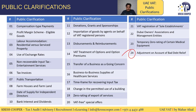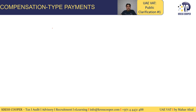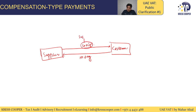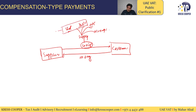Let's start our discussion with the first public clarification, which is compensation type payments. To understand compensation type payments, we need to understand that there is usually a supplier and a customer. The supplier is selling goods or services and getting money from the customer. In the language of the law, this selling is called supply. There are four types of supplies: standard rated supply, zero rated supply, out of scope supply, and exempt supply. Standard rated and zero rated supplies are called taxable supplies.